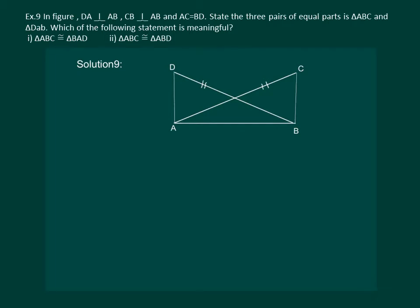Let us read the question. DA is perpendicular to AB and CB is perpendicular to AB. AC is equal to BD. State the three pairs of equal parts in triangle ABC and DAB. Which of the following statement is meaningful: triangle ABC is congruent to triangle BAD or triangle ABC is congruent to triangle ABD?